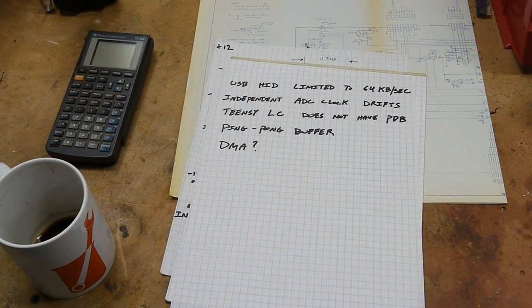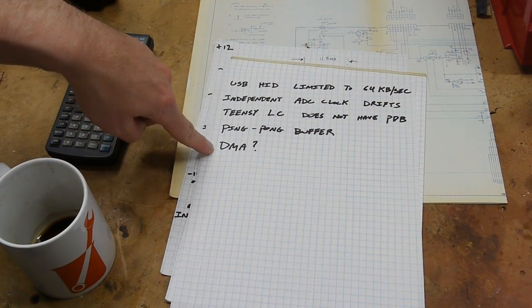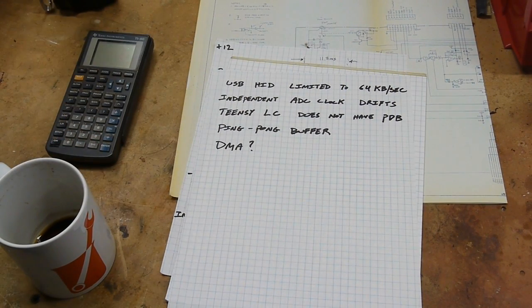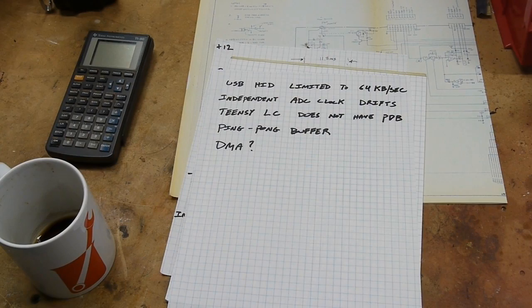And then finally, why am I not using DMA? Most of the resources about Teensy DMA refer to the 3.1, and the DMA controller on the LC is different. I didn't really feel like learning about it, and I got enough performance out of the code the way it's written now, so I just went with that.